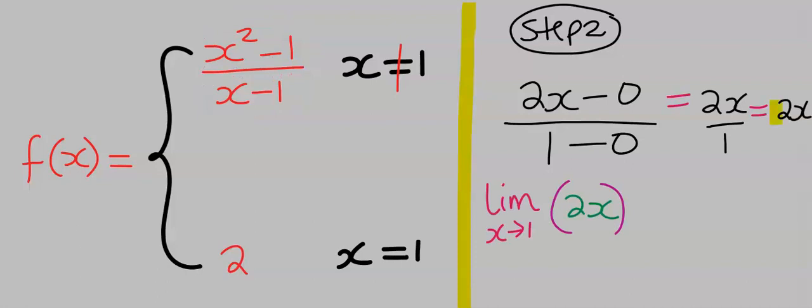Next, take the limit of this remaining function as x tends to 1. And 2 times 1, you got 2, which is the same as we obtained before.